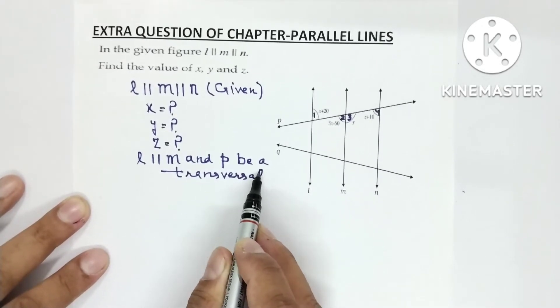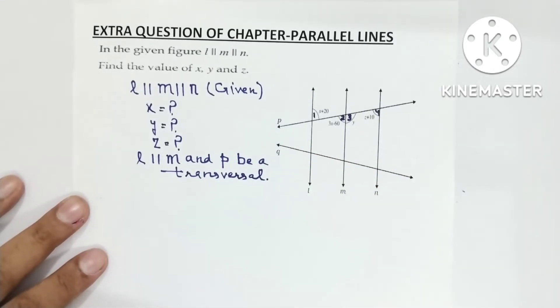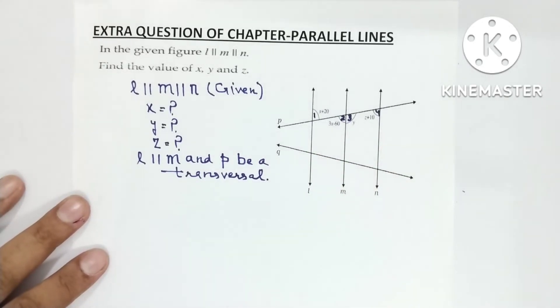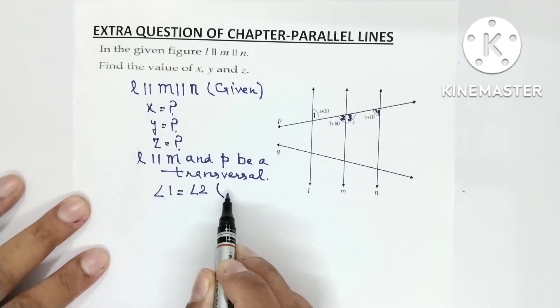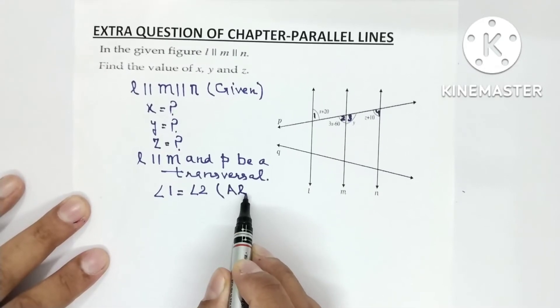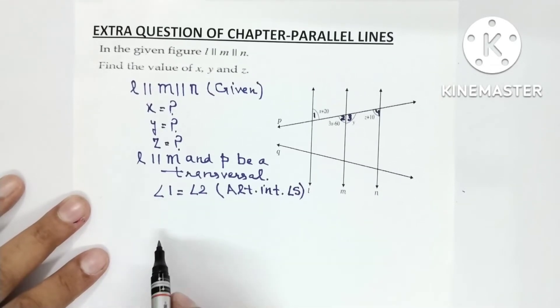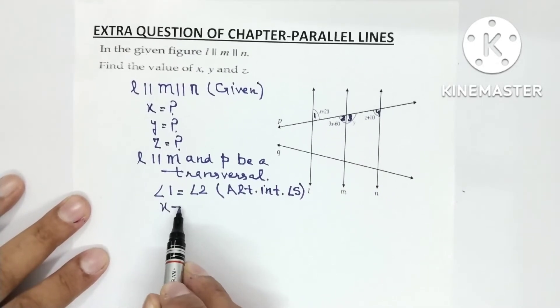L parallel to M and P be a transversal. So can you tell that what is the relationship between angle 1 and 2? Look carefully, one is this side, one is this side. So these are alternate interior angles. So we will write angle 1 is equal to angle 2. In the bracket, alternate interior angles. So angle 1 value is X plus 20.